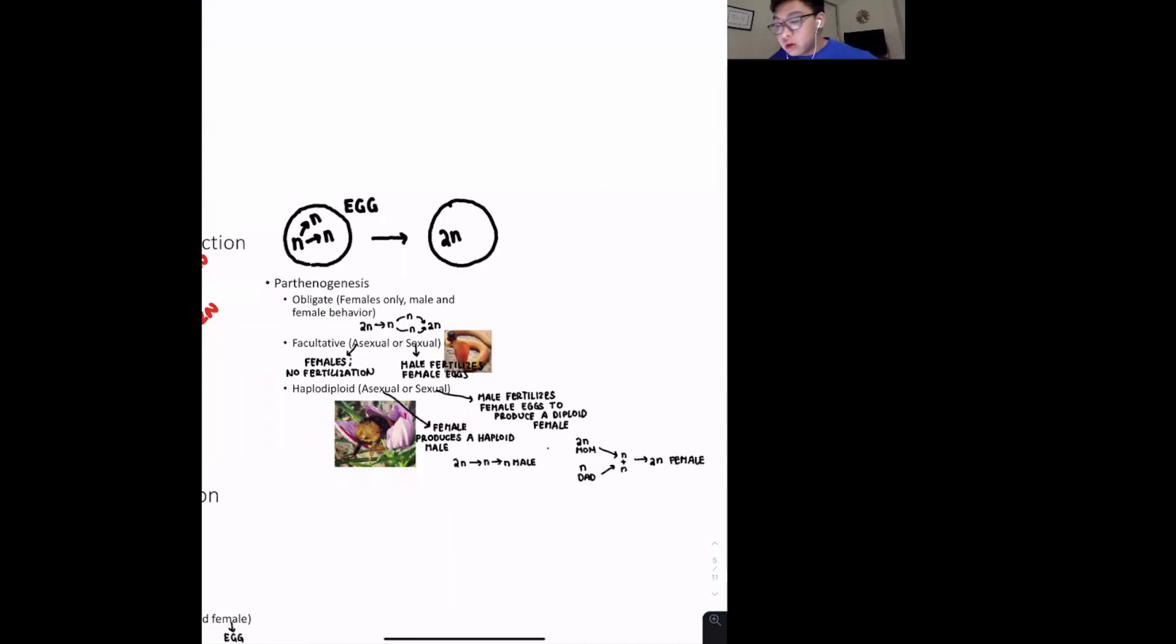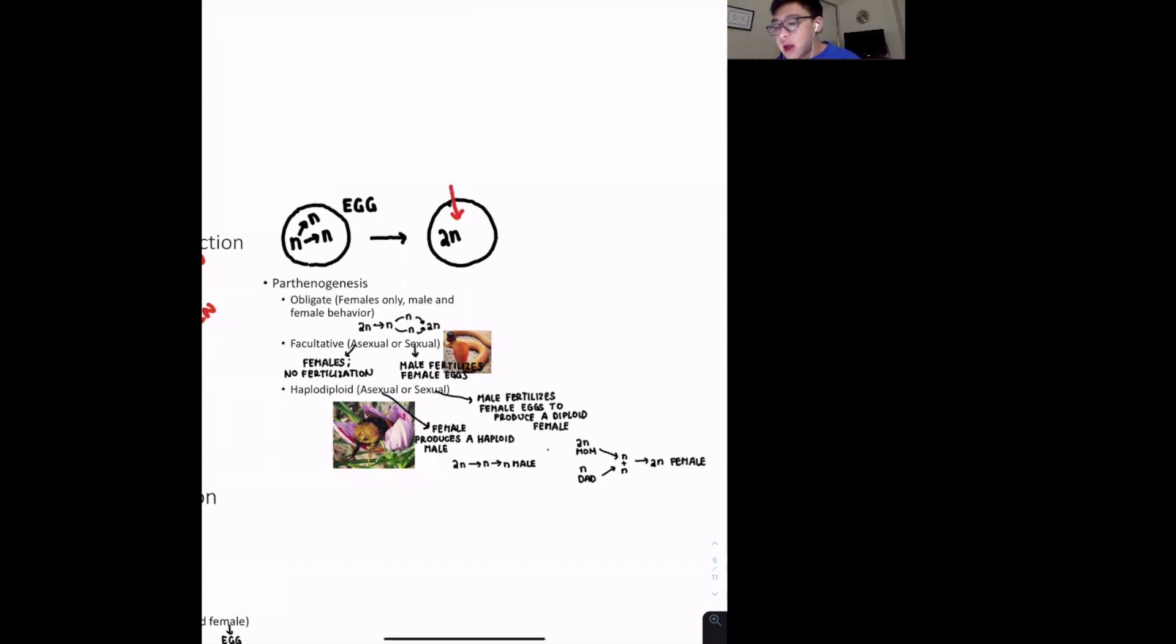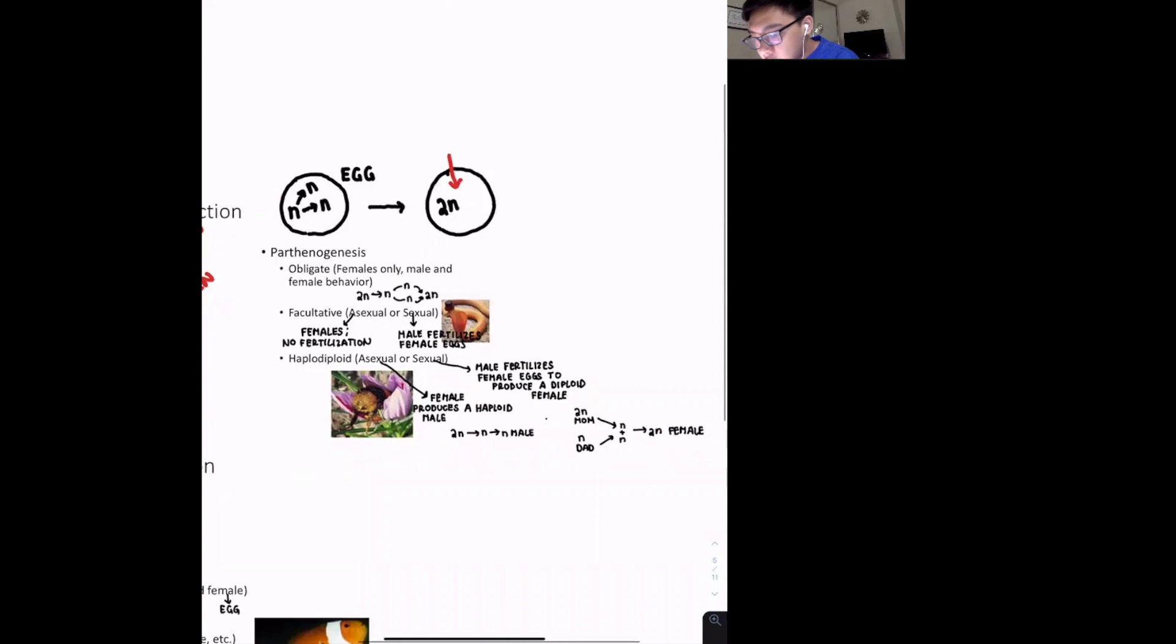The next type of asexual reproduction is parthenogenesis. And so in this case, the basis of parthenogenesis is we're taking an N haploid egg cell from the mom that the one set of chromosomes will duplicate. And then we're going to get a 2N egg that consists of two maternal genomes. So the first type is going to be obligate parthenogenesis. This is essentially we have a female only. And so they can have male and female behaviors, but at the basis, they only have egg cells. So therefore they are only female.